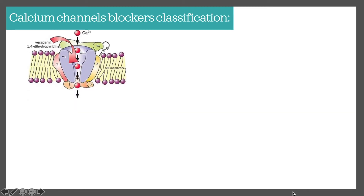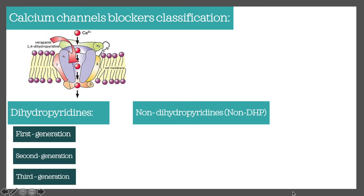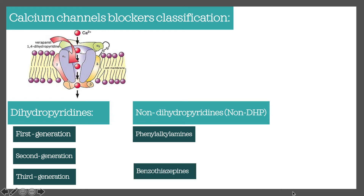Calcium channel blocker classifications are very important. They can be split into dihydropyridines (DHPs) and non-dihydropyridines (non-DHPs). They can be further classified as first, second, and third generation. Non-DHPs include phenylalkylamines and benzothiazepines — there are only two non-DHP drugs you need to be aware of as a clinician.